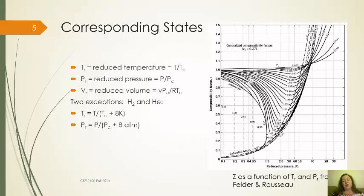You can also have a reduced volume which would be the volume divided by the critical volume if we believe that it's an ideal gas, so V times PC over RTC.